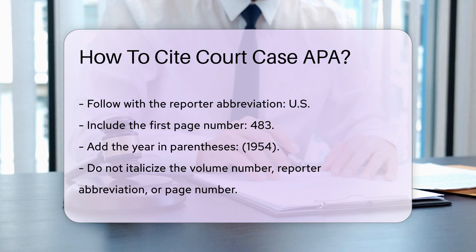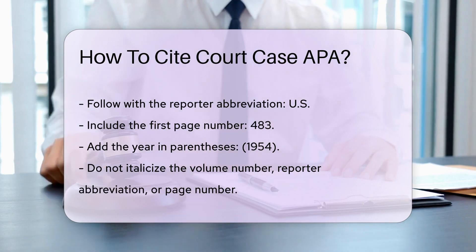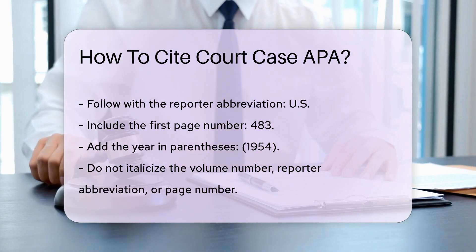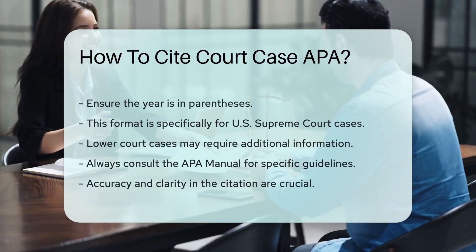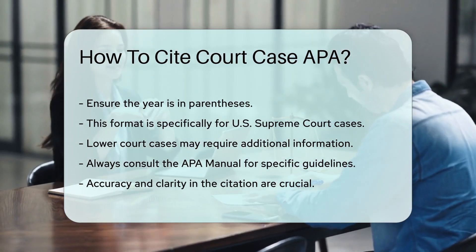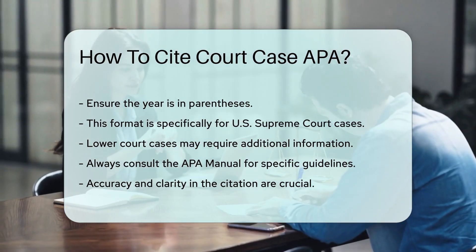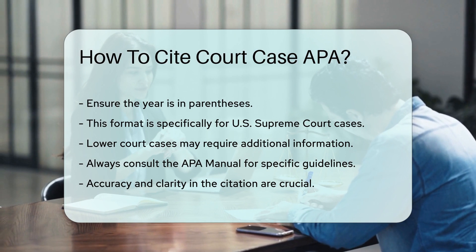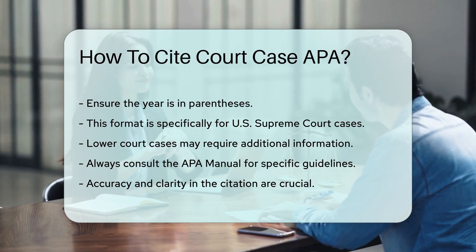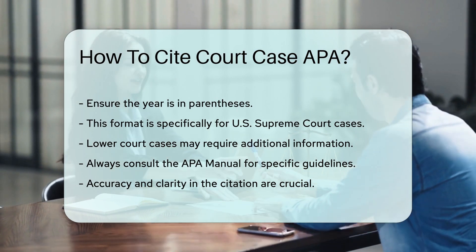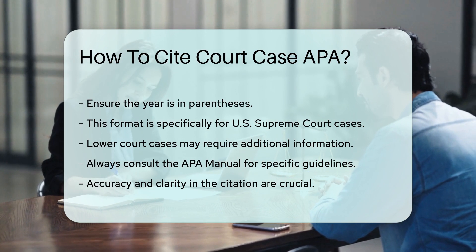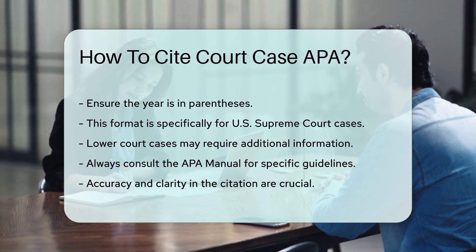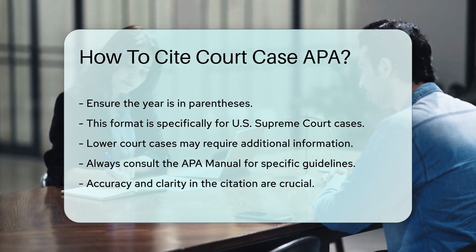Remember to italicize the case name. Do not italicize the volume number, reporter abbreviation, or page number. Place the year in parentheses. Ensure the entire citation is clear and accurate. This format applies to U.S. Supreme Court cases. For lower court cases, additional information may be required. Always consult the APA manual for specific guidelines.